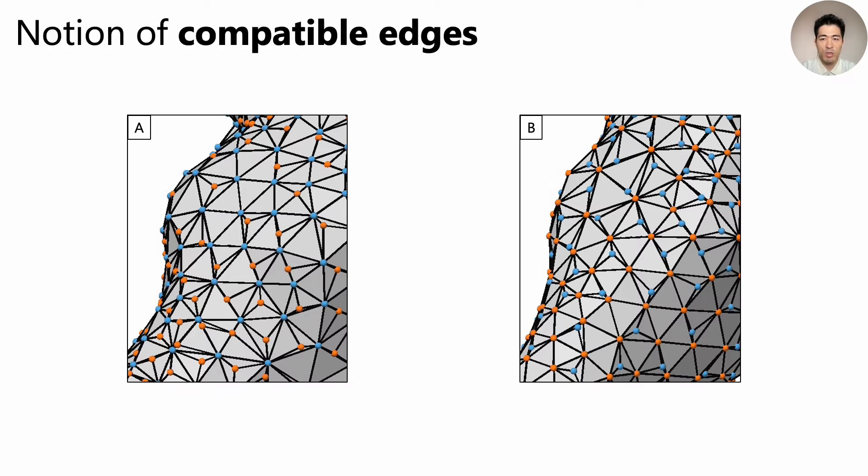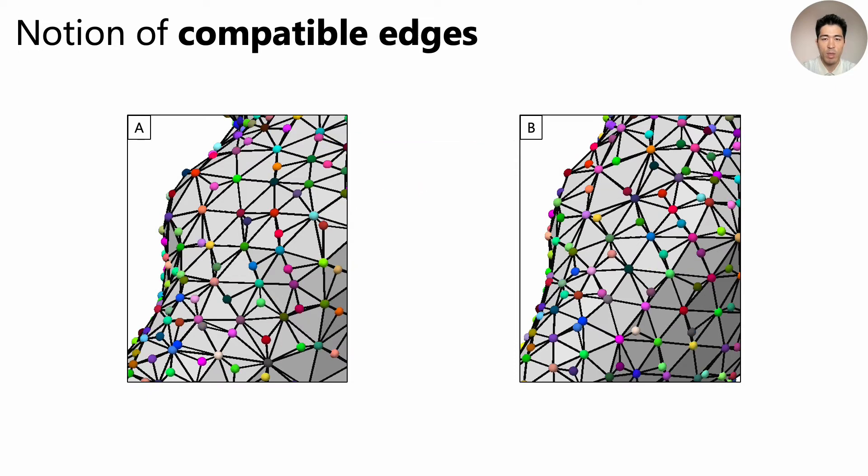Now I'd like to introduce the notion of compatible edges. First of all, recall that every vertex is already in one-to-one correspondence by definition. So we assign random colors to corresponding vertices.